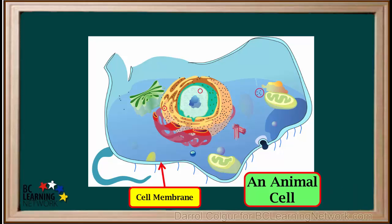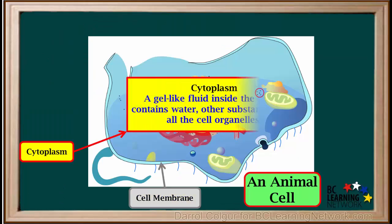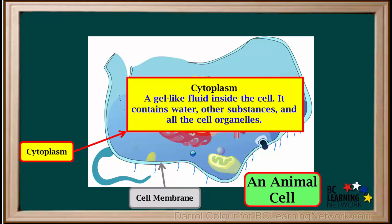An important part of all cells is the cell membrane. The cell membrane is a layer that protects and surrounds cells. It controls substances that flow in and out of the cell. The cytoplasm is a gel-like fluid inside the cell. It contains water, other substances, and all the cell organelles.